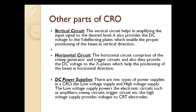Horizontal circuits are comprised of sweep generators and trigger circuits, and they provide DC voltage to the X-plates to help position the beam in the horizontal direction. The next two parts are high voltage and low voltage power supplies. High voltage power supplies go to all parts of the CRT, while low voltage power supplies go to the other parts of CRO like vertical circuits, horizontal circuits, trigger circuits, and time-based circuits.